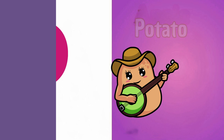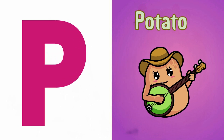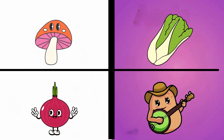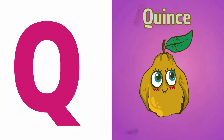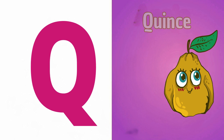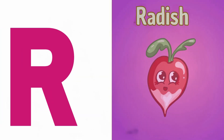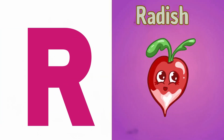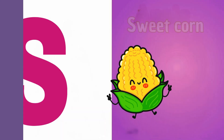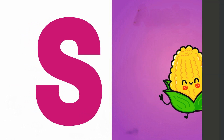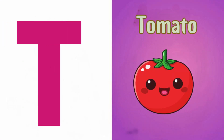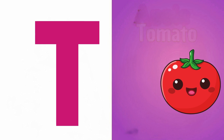O is for Onion, Onion. P is for Potato, Potato. Q is for Quince, Quince. R is for Radish, Radish. S is for Sweet Corn, Sweet Corn. T is for Tomato, Tomato.